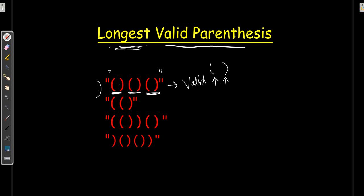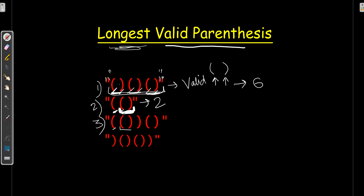In the first example, we have six parentheses — one, two, three, four, five, six — and this is the longest valid one. In the second expression, we have an open brace then an open and close pair. That inner pair is valid, but the first open brace has no closing match, so the longest valid parenthesis is just two. In the third expression, we have an open brace, then a pair, then it closes the first one, giving us six.